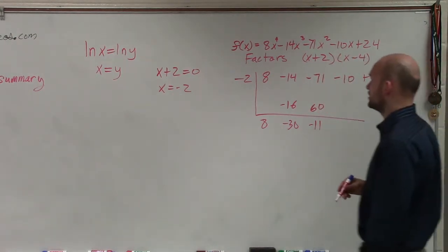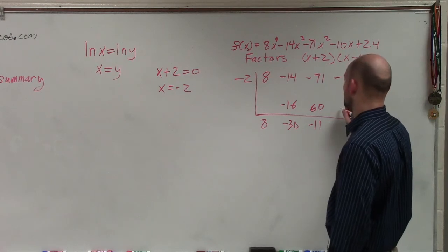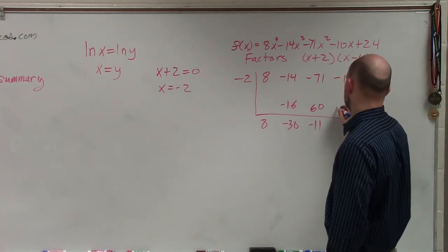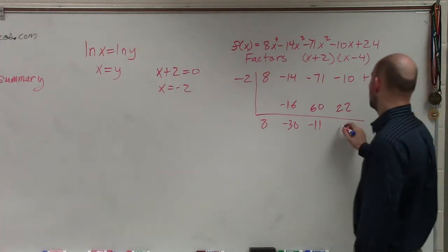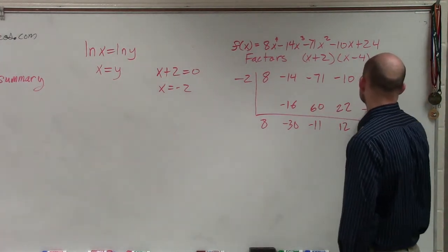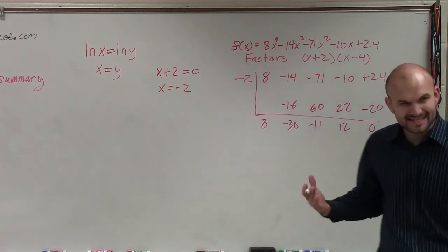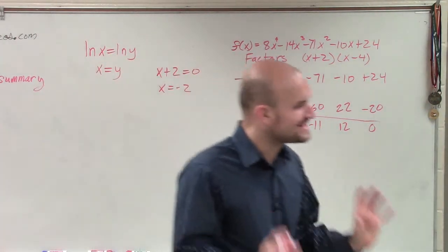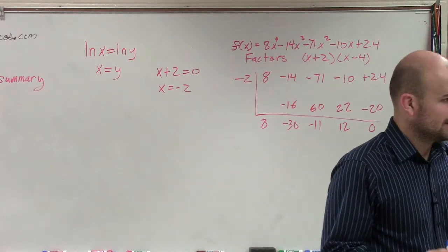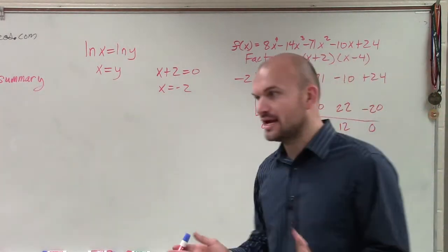Negative 11 times negative 2 is a 22. That becomes a positive 12. 12 times negative 2 is negative 24, which is a 0. Right? It has to be a remainder of 0. If you didn't get a remainder of 0, you should have stopped and not gone any further and double-checked your work.